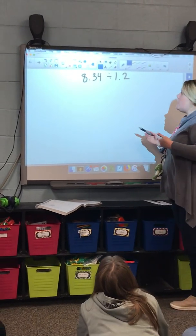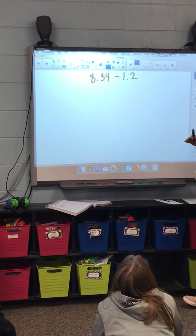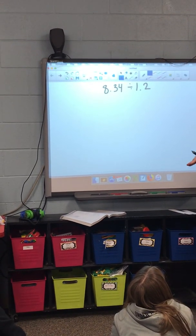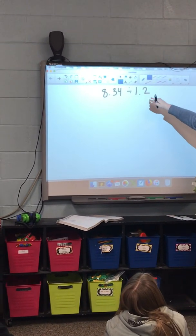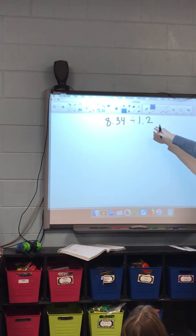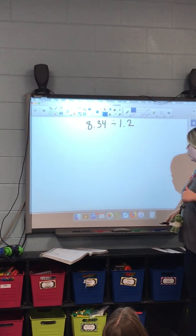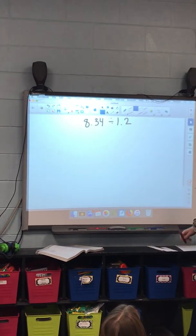But before we can do our box method, we have to make a change here because dividing a decimal by a decimal is not our friend ever. We want to be able to make that decimal in our divisor a whole number. And we know from Newton's Law that whatever happens on one side happens on the other, right? We know that.